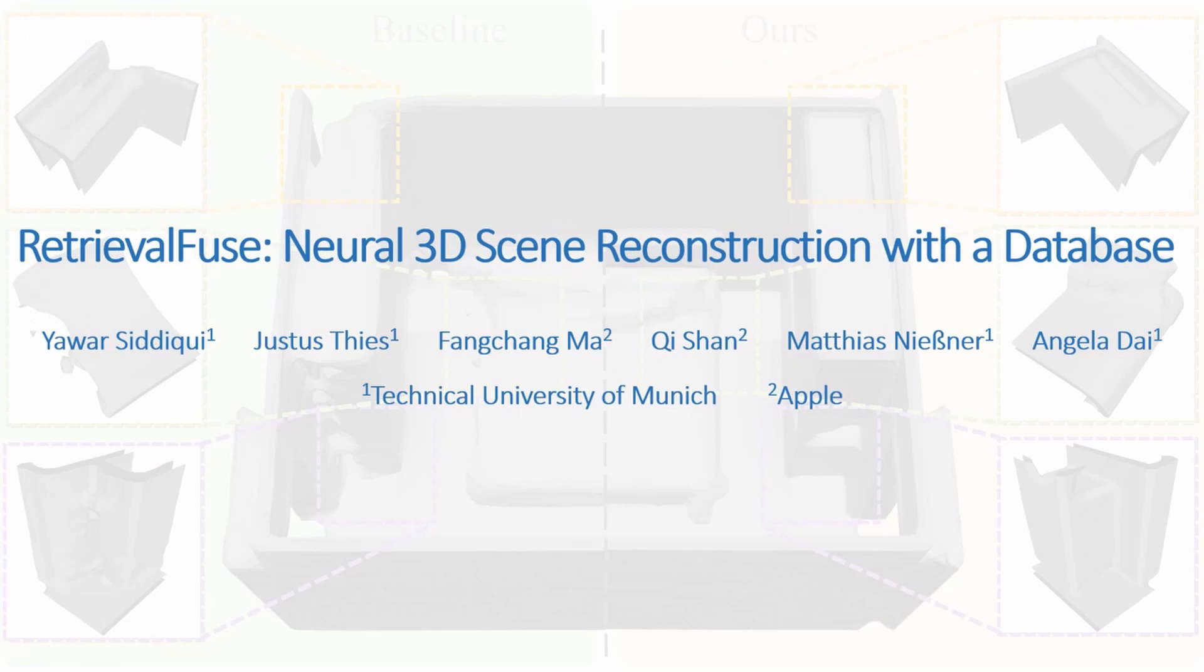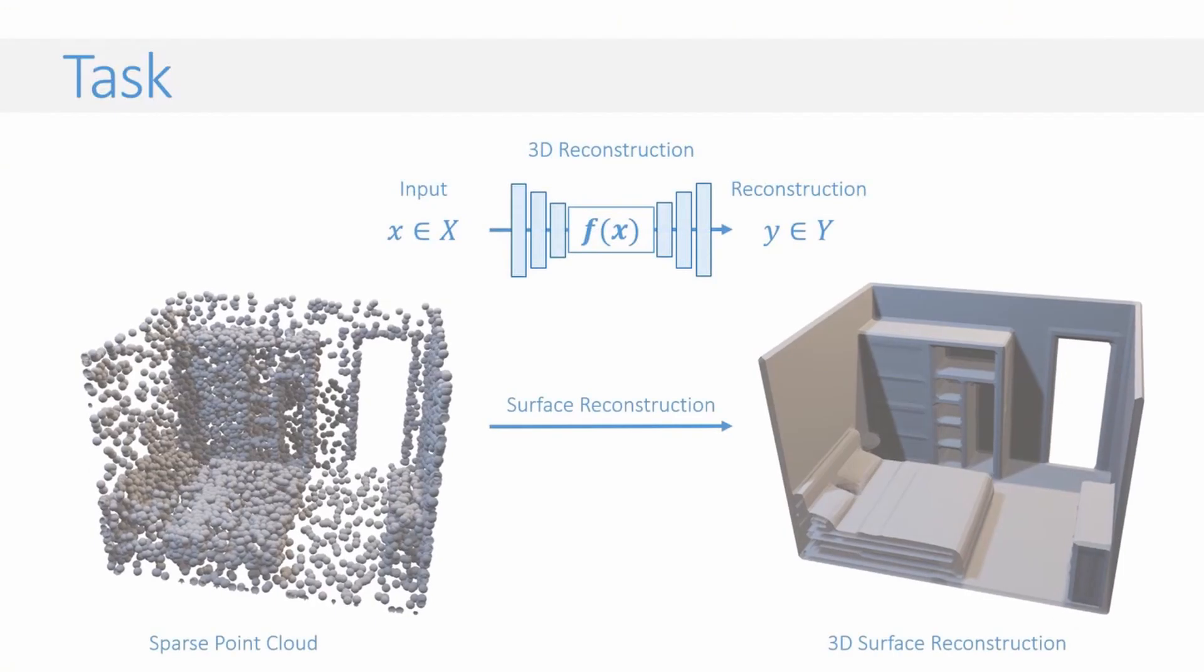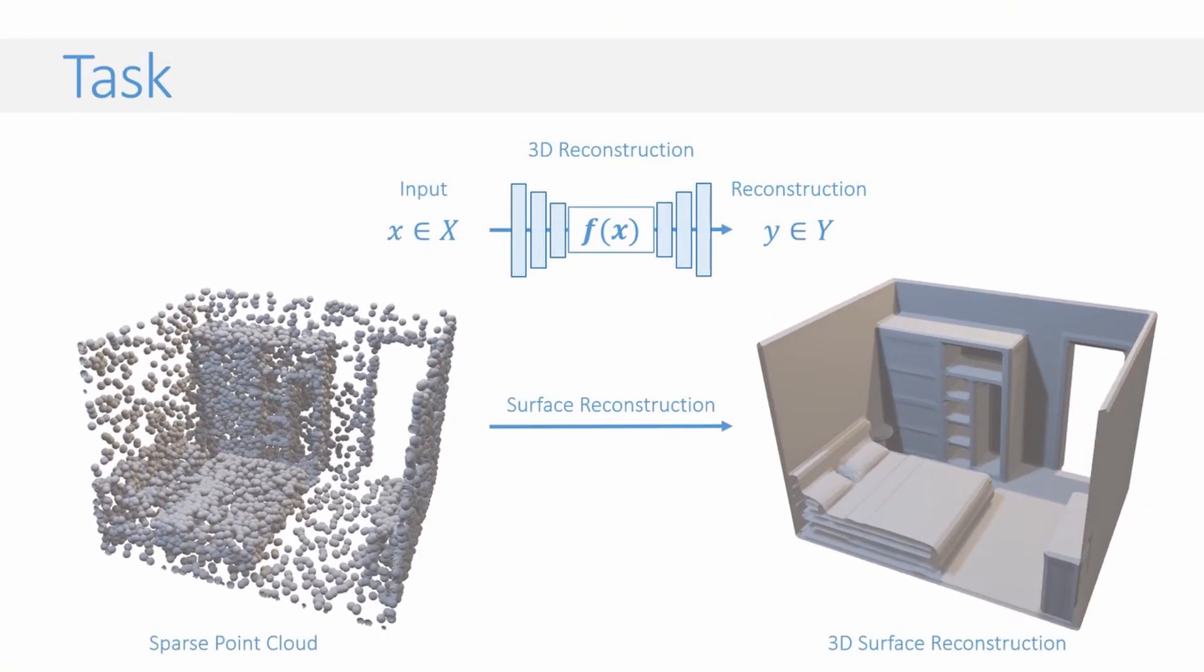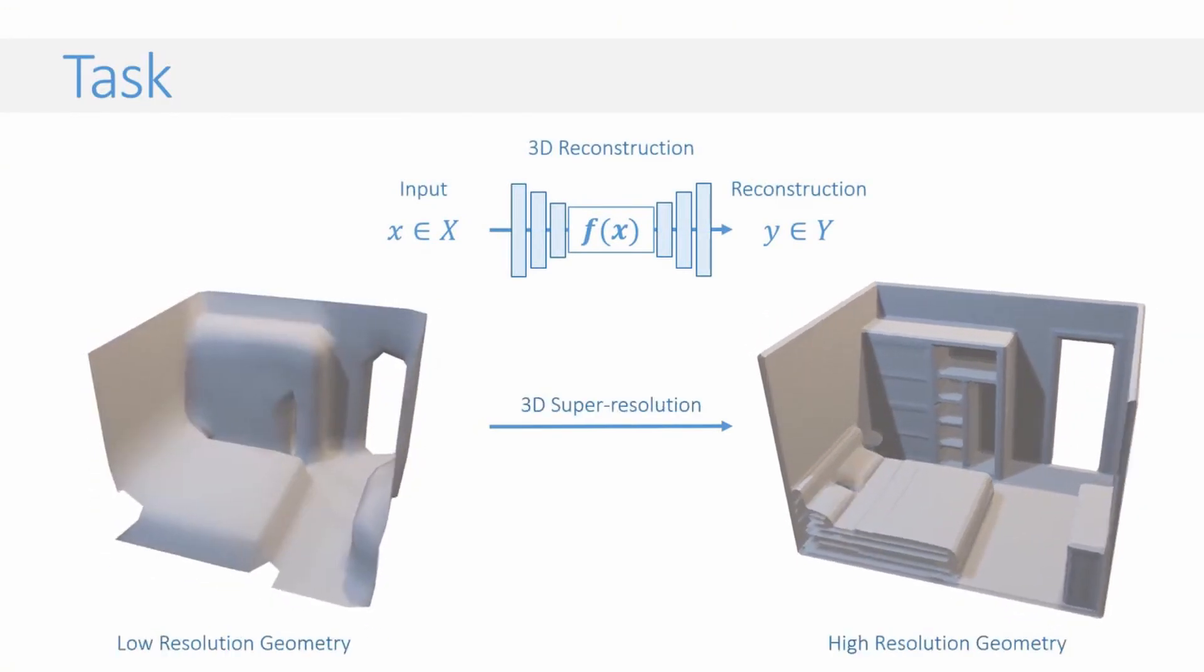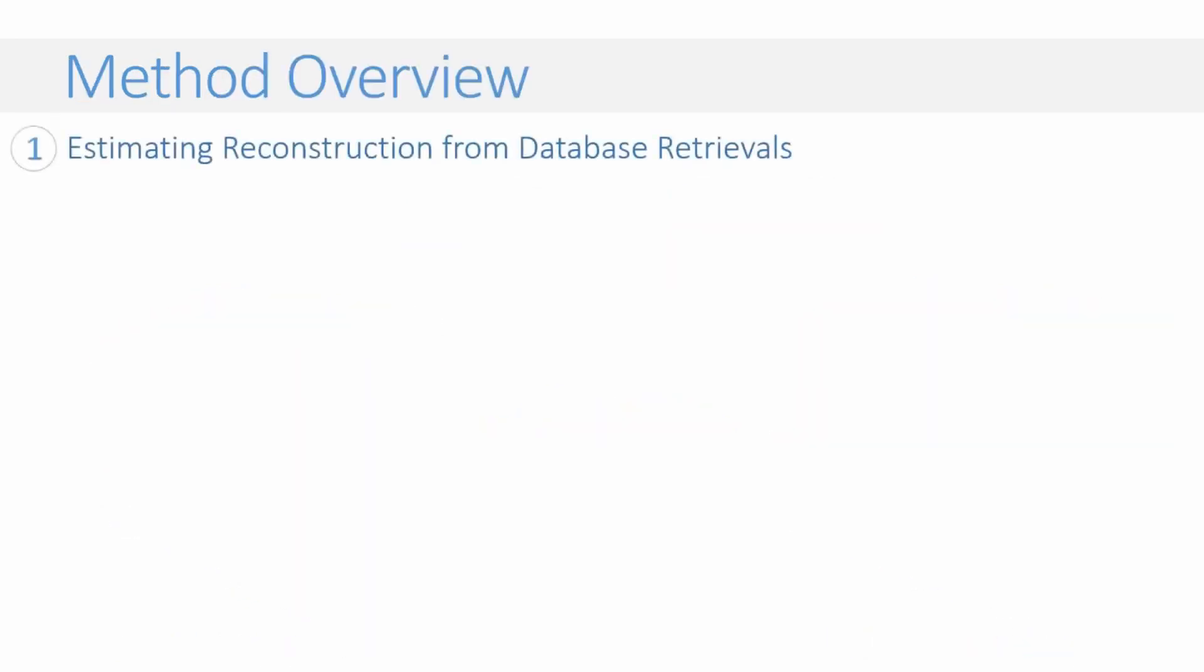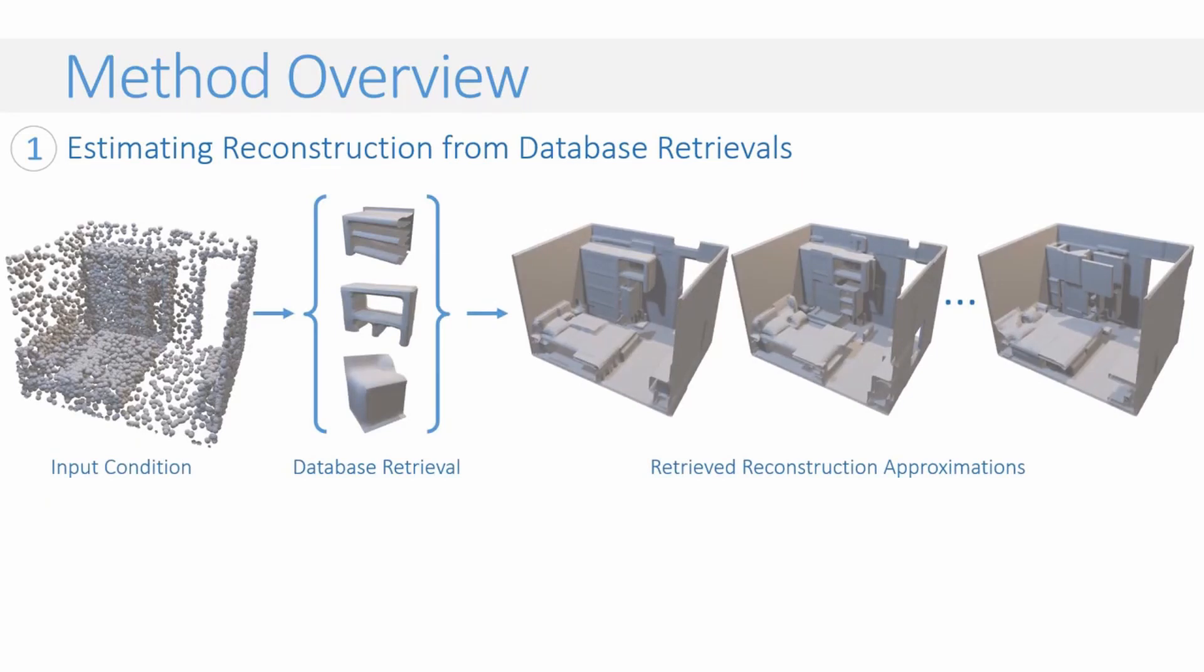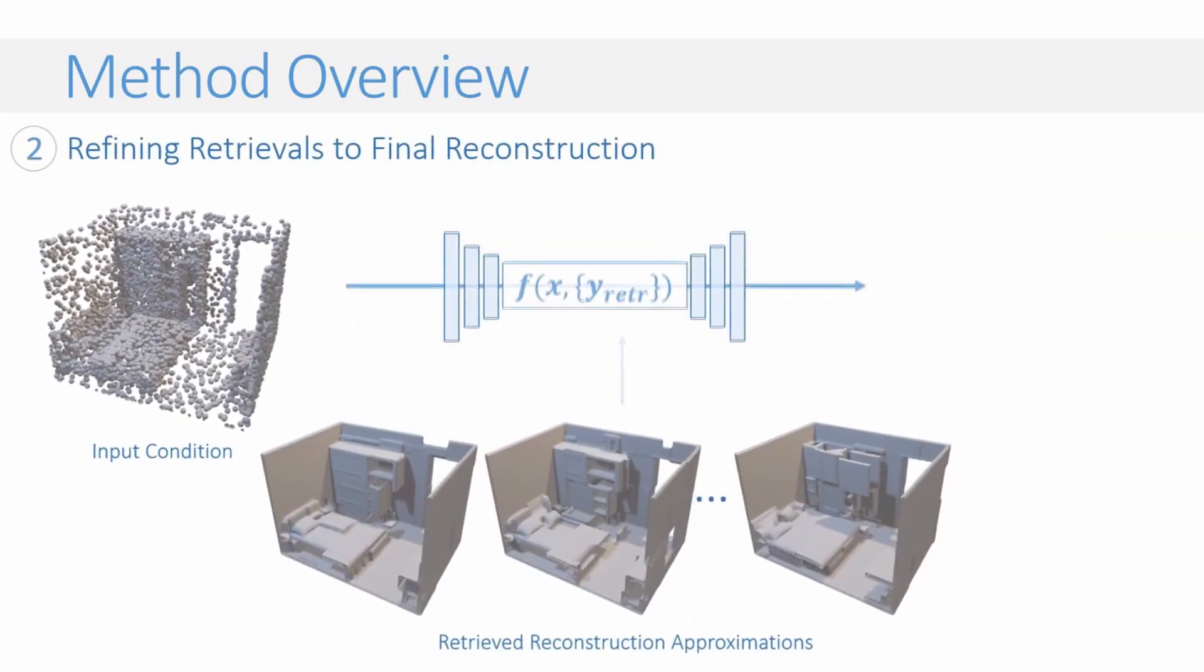We present Retrieval Fuse to tackle the task of 3D reconstruction. We explore tasks such as point cloud to surface reconstruction and super-resolution where we have spatial input conditions for reconstruction. Our method first estimates approximate reconstructions based on retrieving volumetric train chunks from the database. We then learn to fuse these approximate reconstructions to a final output.